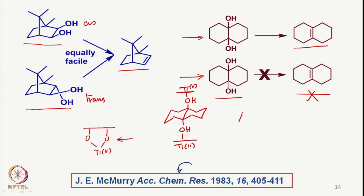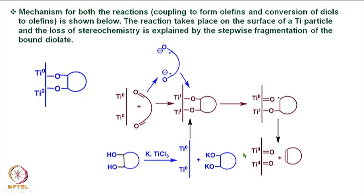On the other hand, with the cis-diol where both OH groups are cis to each other, they can go to the same intermediate. But obviously they need not go through two different titanium binding sites. So both the first and second mechanistic possibilities are completely ruled out. The remaining — third — type of mechanism involves attachment of the oxygen to the titanium surface, which eventually leads to formation of the olefin. Both the coupling of carbonyl compounds to form olefins and the conversion of diols to olefins can be considered in this framework.